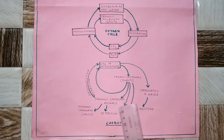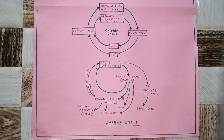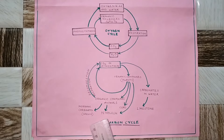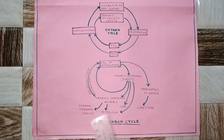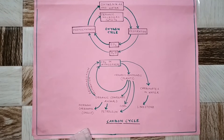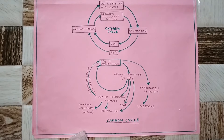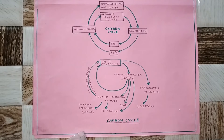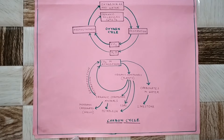During respiration, oxygen is also used, because glucose is broken down with the help of oxygen — that is known as aerobic respiration. If glucose is broken down without oxygen, then it is referred to as anaerobic respiration, which happens in yeast cells, and the process is known as fermentation.